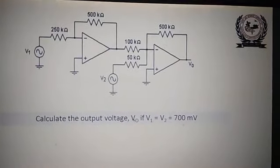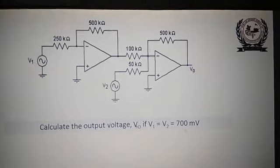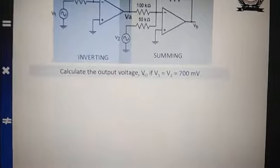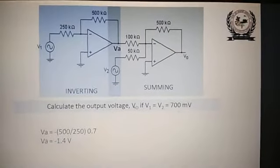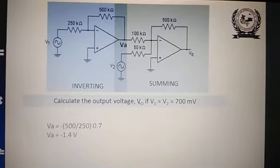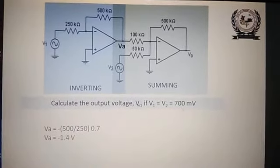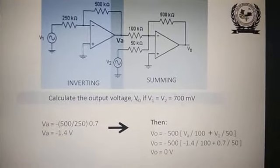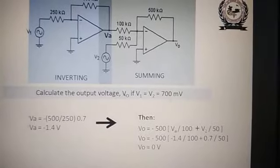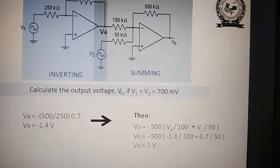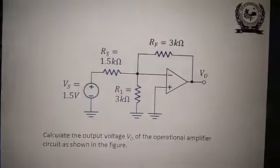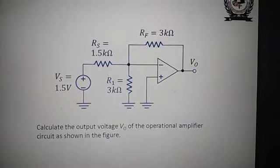Calculate the output voltage if V1 = V2 = 700 millivolt, with the first stage being an inverting amplifier and the second a summing amplifier. VA = -500/250 × 0.7 = 1.5 volt, which is the output of the inverting amplifier and input to the summing amplifier. V0 = -500 × (VA/100 + V2/50), which comes to be 0 volt.